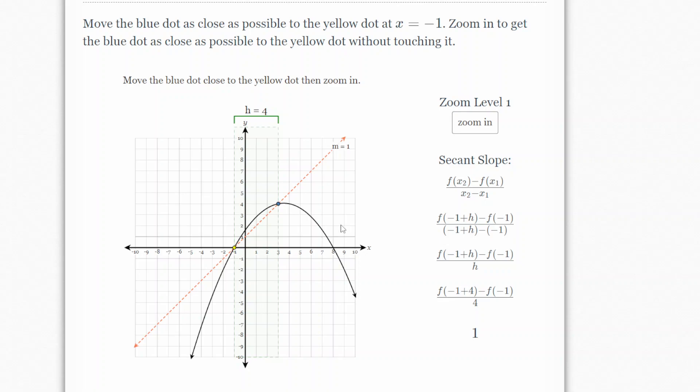So this really is just an exploration lesson of moving this blue dot close. And so what happens is you see h, this value is getting less. So we're getting closer and closer to the yellow dot without really being on top of it.